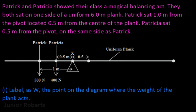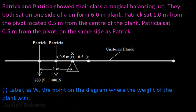Junior Roberts here again — we're doing another worked example for CSEC physics. The question says Patrick and Patricia showed their class a magical balancing act. They sat both on one side of a uniform six-meter plank. Patrick sat one meter from the pivot, which is located 0.5 meters from the center of the plank. Patricia sat 0.5 meters from the pivot on the same side as Patrick.